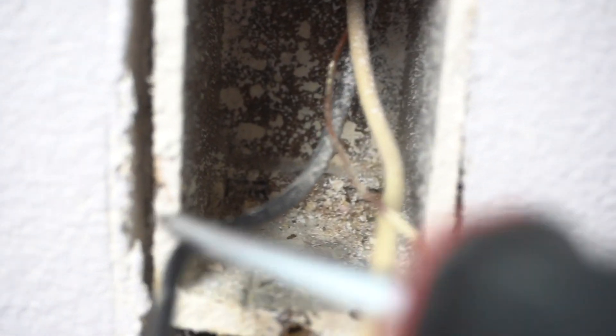Now this old junction box, as you can see where I'm pointing at, is secured by two nails, which is pretty much exposed right there. You can clearly see it.